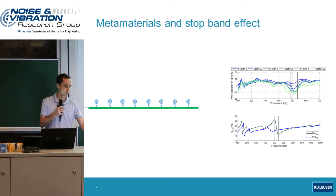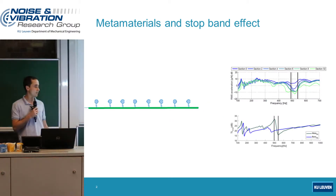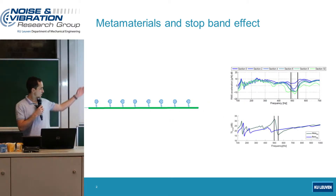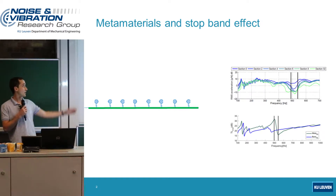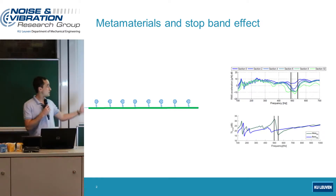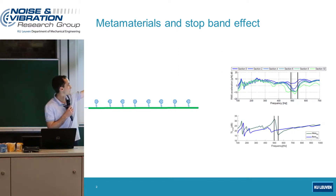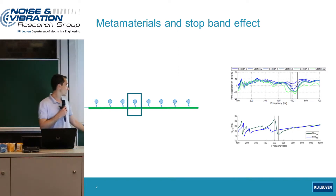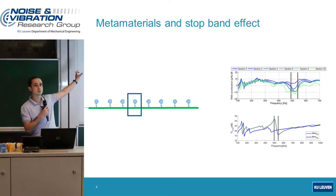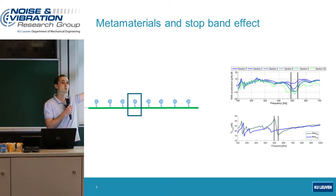In these stopbands, we notice that we have a large vibration attenuation and a large improvement in sound transmission loss. And to predict where it's going to happen — represented by these black vertical lines — we use unit cell modeling. By modeling just one single cell, we can predict where in frequency this stopband is going to happen.